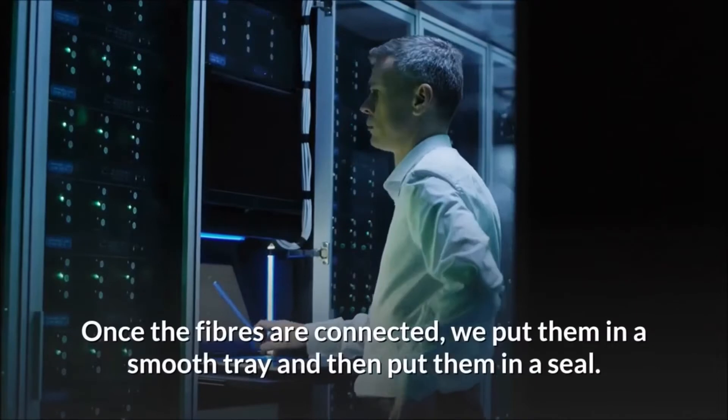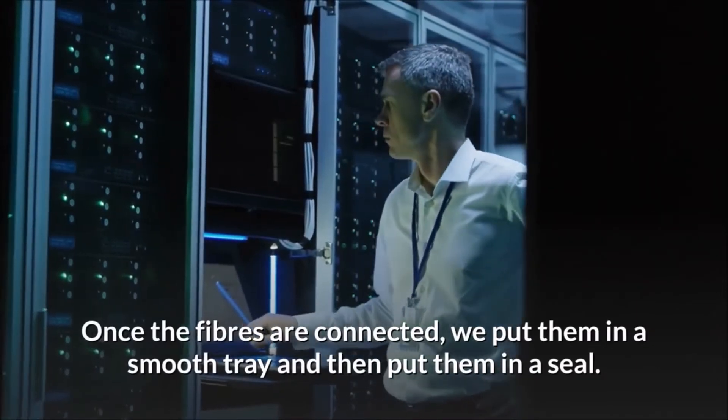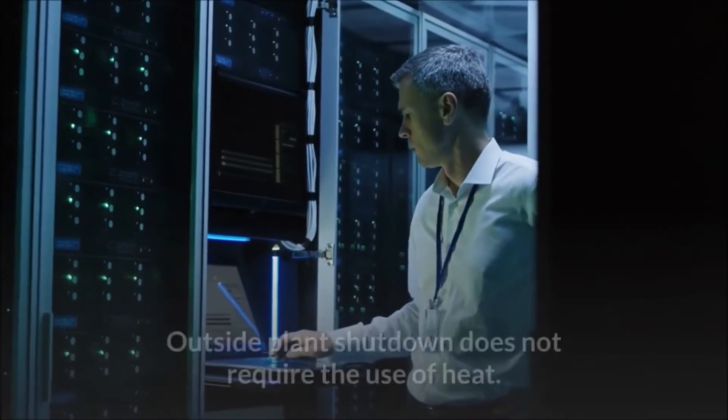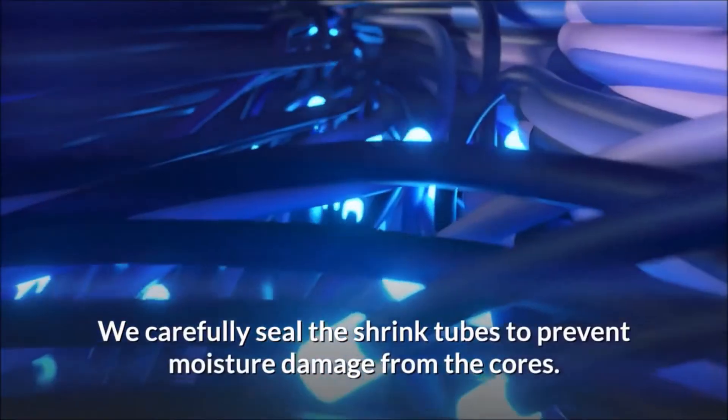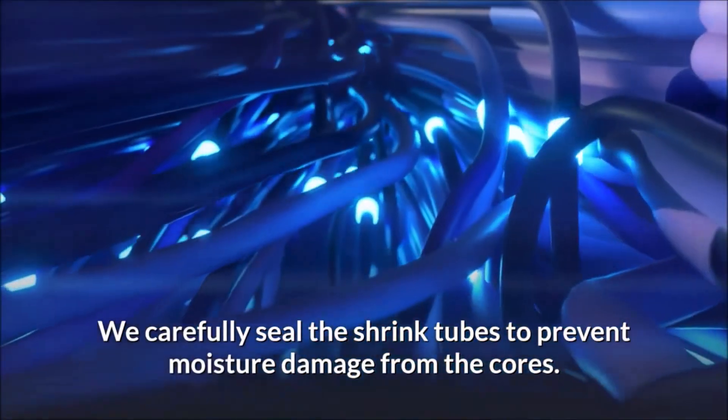Step 4: Once the fibers are connected, we put them in a smooth tray and then put them in a seal. Outside plant shutdown does not require the use of heat. We carefully seal the shrink tubes to prevent moisture damage from the cores.